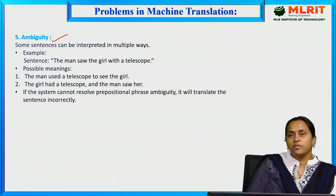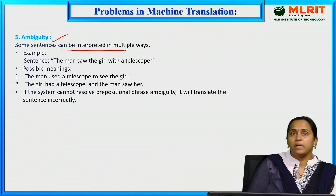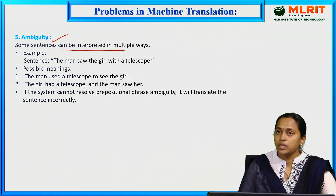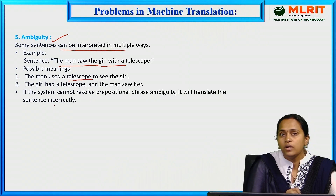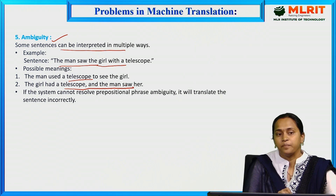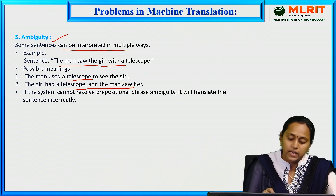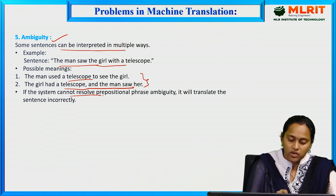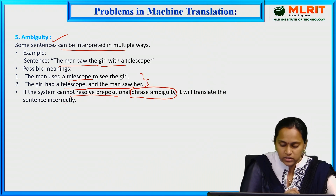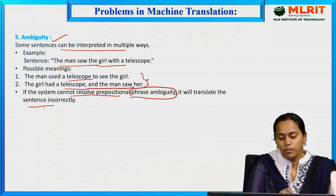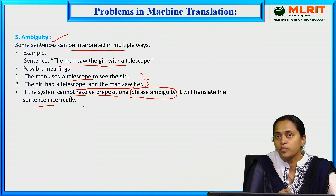The fifth problem is ambiguity — a major problem in natural language processing. Sometimes sentences can be interpreted in multiple ways. For example, 'the man saw the girl with the telescope' could mean the man used a telescope to see the girl, or the girl had a telescope and the man saw her. The system cannot resolve this prepositional phrase ambiguity, leading to incorrect translations.